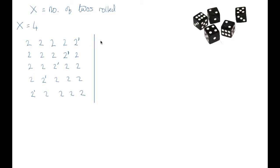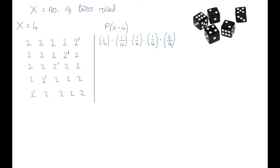Let's think about what the probability of just one of these scenarios is. Looking at the first one: the probability of that first two is one over six. The second two is also one over six, the third is one over six, the fourth die displaying a two is one over six. This last one has a probability of five over six — it could be any of five numbers out of a possible six, any number other than two. We can simplify this: we've got four one-over-sixes, so I'm going to put that to the power of four, and then we've just got one five-over-six.